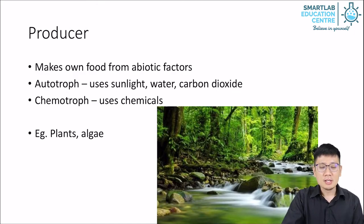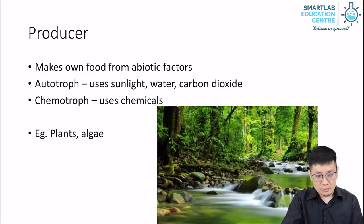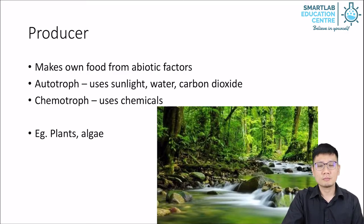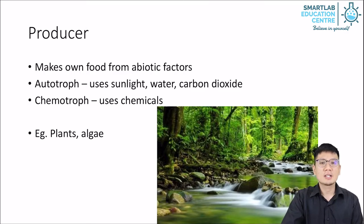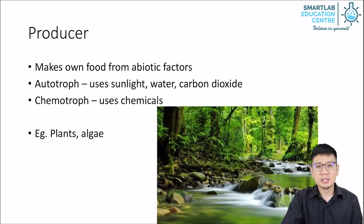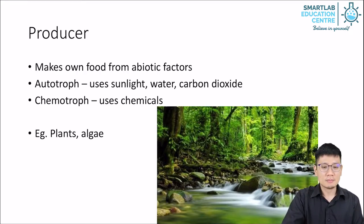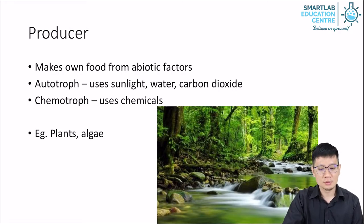There are actually other types of producers other than these photosynthesizers. There are also organisms that can use other chemicals. For example, found in deep sea vents, we have those that use sulfur as an energy source, but we don't talk about them here. For lower secondary science, let's focus on plants.